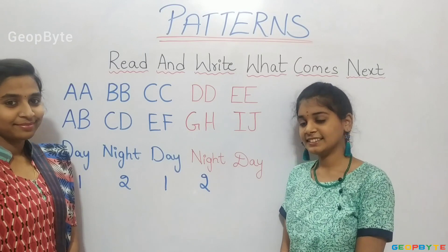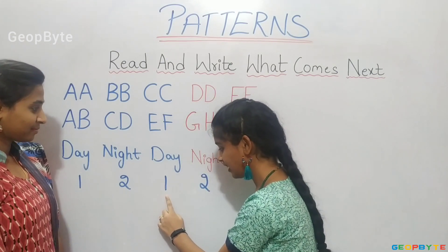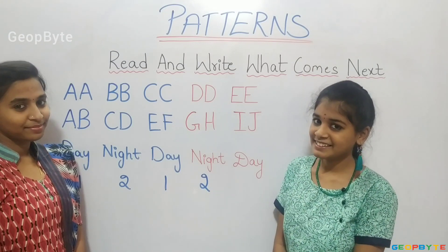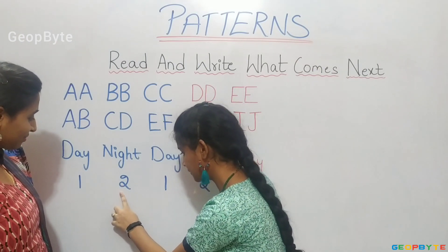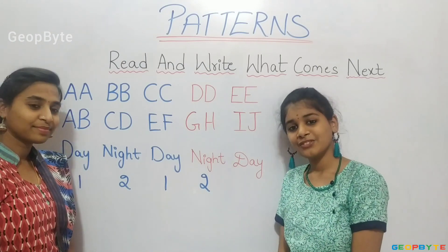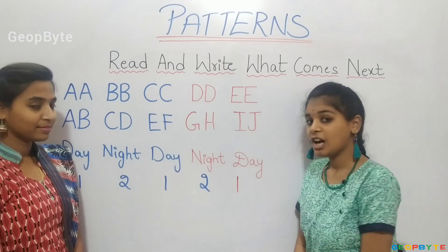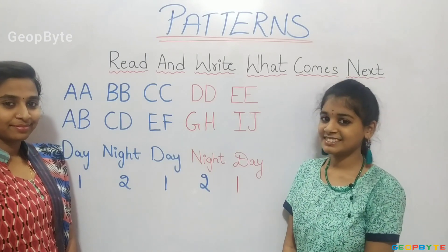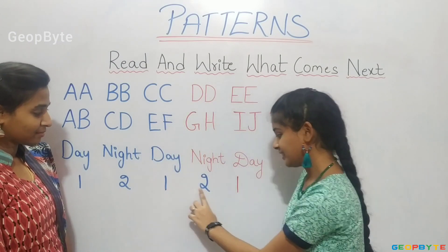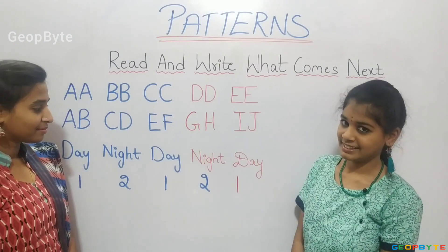Now let us see this example. One, two, one, two. After two, which number comes? Let us see. After two, there will be one. Let us write one. After one, which number comes? Let us see. After one, there is two. After one, there is two. So after one, there will be two. Let us write two.